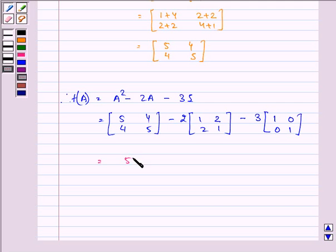So we have 5, 4, 4, 5 minus 2, 4, 4, 2 minus 3, 0, 0, 3.